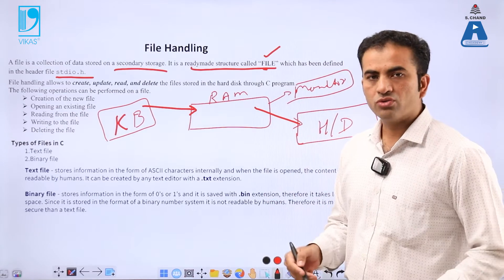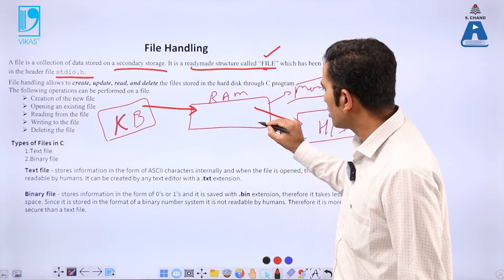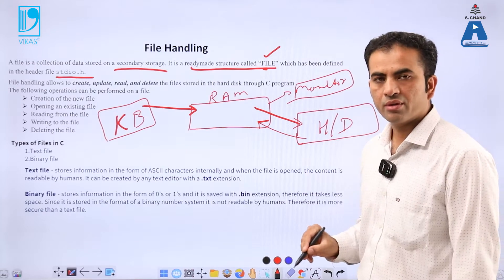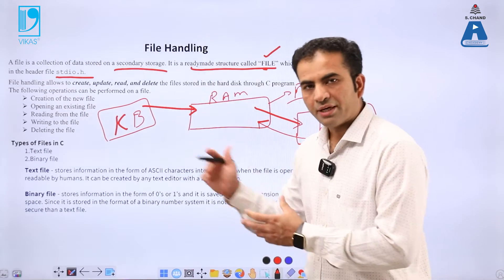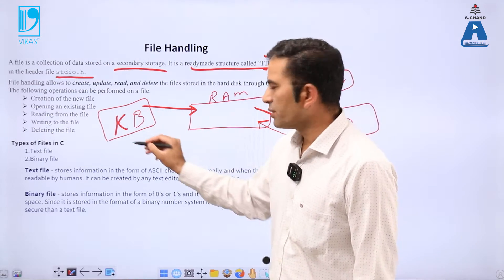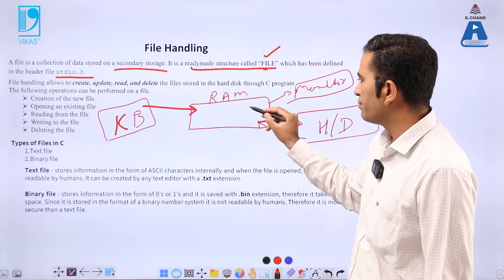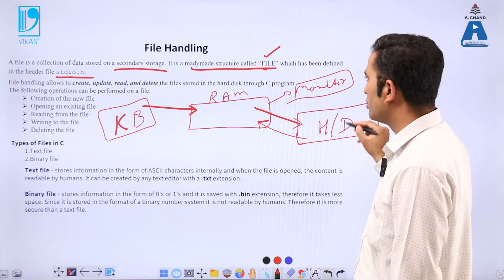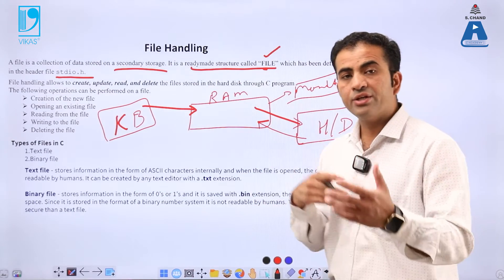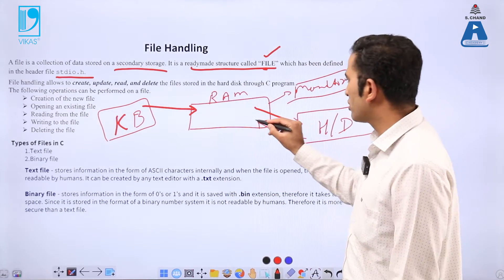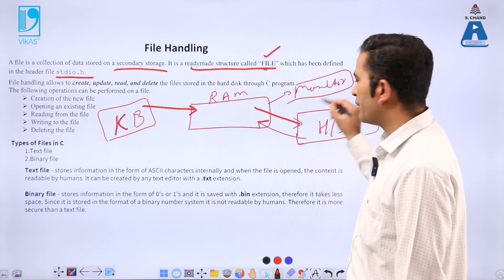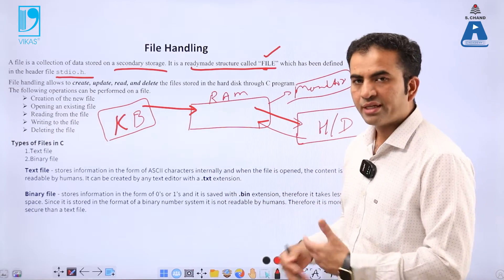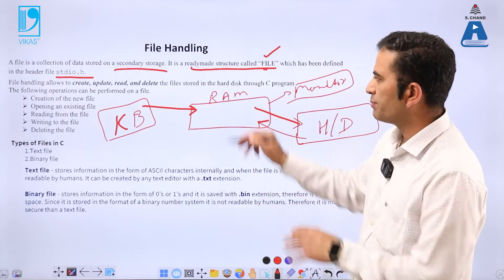When we call those values from the hard disk, they go inside the RAM, and from the RAM they are printed on the monitor. To briefly explain again: you insert data from the keyboard, it goes into the RAM. The values you need to permanently save go into the hard disk using file handling. When you need to access those values again, from the hard disk they go back into the RAM and are displayed on the monitor.